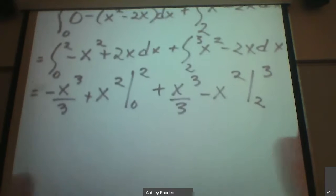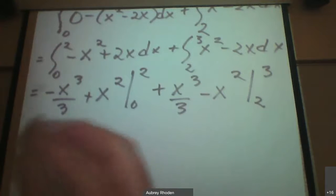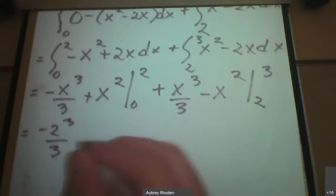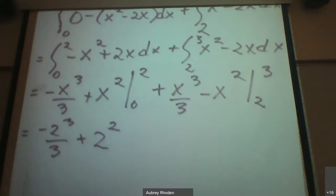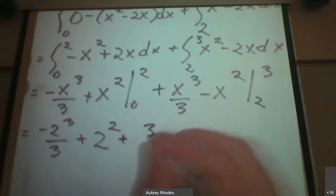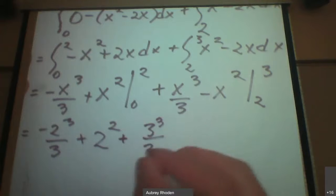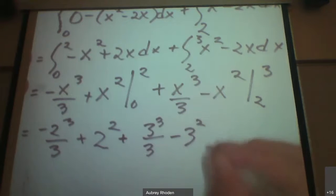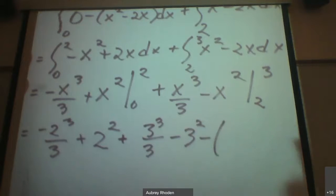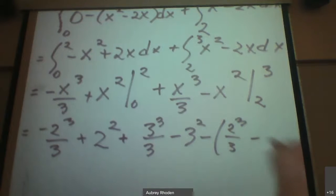So I don't care about plugging in the 0s. Let's just plug in that 2. So that's going to become negative 2 cubed divided by 3 and then plus 2 squared, and like I said, I don't care about the 0s because those are just 0s. And then that's going to be plus now 3 cubed divided by 3 minus 3 squared and then minus, that's going to be 2 cubed divided by 3 and minus 2 squared.